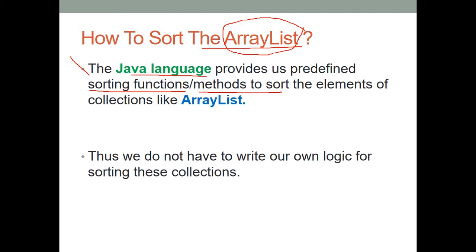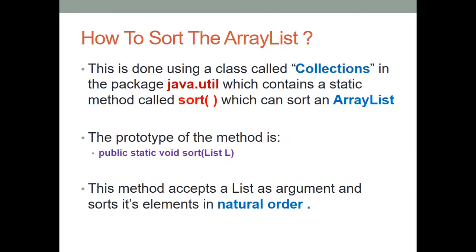There are two ways to sort an ArrayList. The first way uses the Collections class. Collections is not an interface — it is a class, like ArrayList — and it provides methods to sort elements of collections like ArrayList. So you don't have to write your own logic to sort a collection; it's an inbuilt method to sort the collection. Now, how to sort an ArrayList?